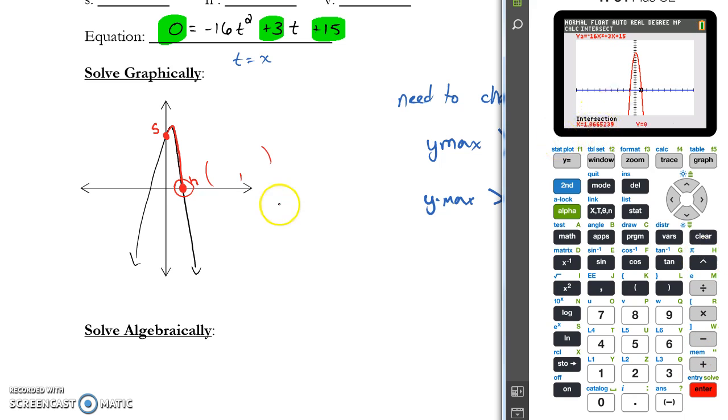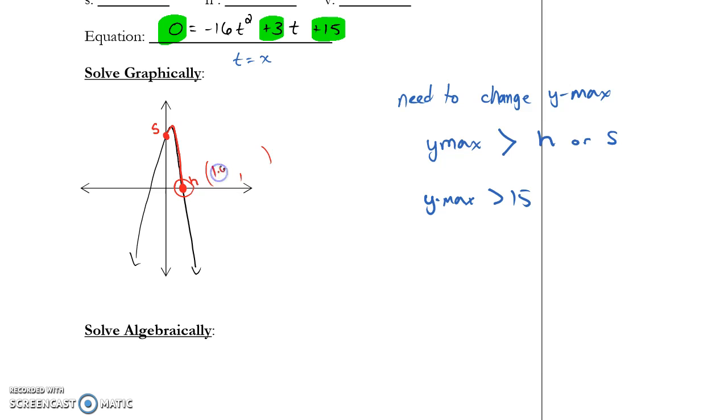1.066 means this is at 1.07 comma 0. Our solution is that it is going to take 1.07 seconds to hit the water. So that's when we're solving graphically. We could also solve this algebraically.